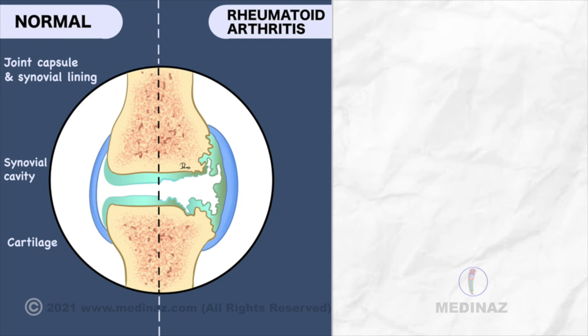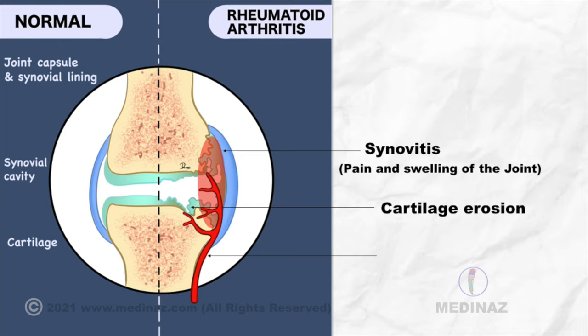In rheumatoid arthritis, there will be inflammation of the synovial membrane which is called synovitis, which can cause pain and swelling of the joint. Also, there will be bone and cartilage erosion and angiogenesis. Now, let's see what is the mechanism behind all those macroscopic changes.